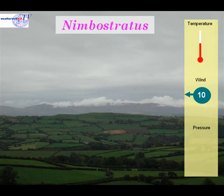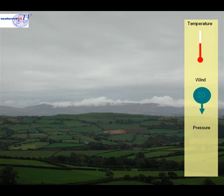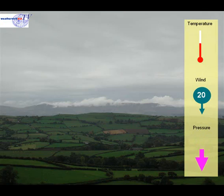Ahead of the front, with those clouds thickening, the rain will start to fall. The winds will back and the speed of the wind will tend to increase. The rain may become heavy at times as the pressure falls. Visibility may become poor in the rain as well, while the temperature remains steady.